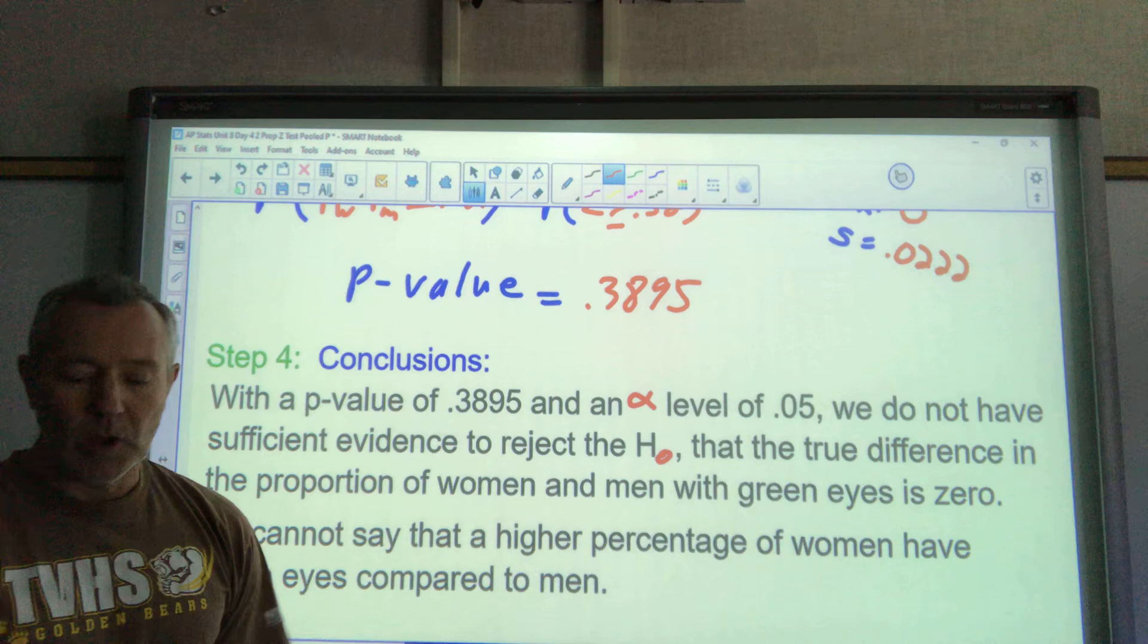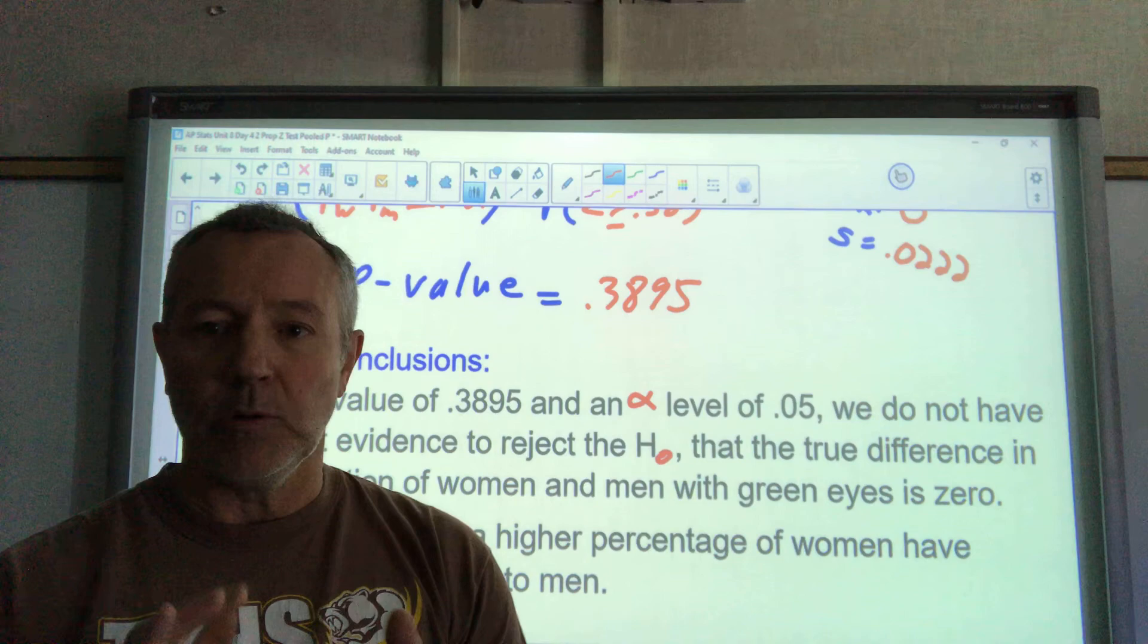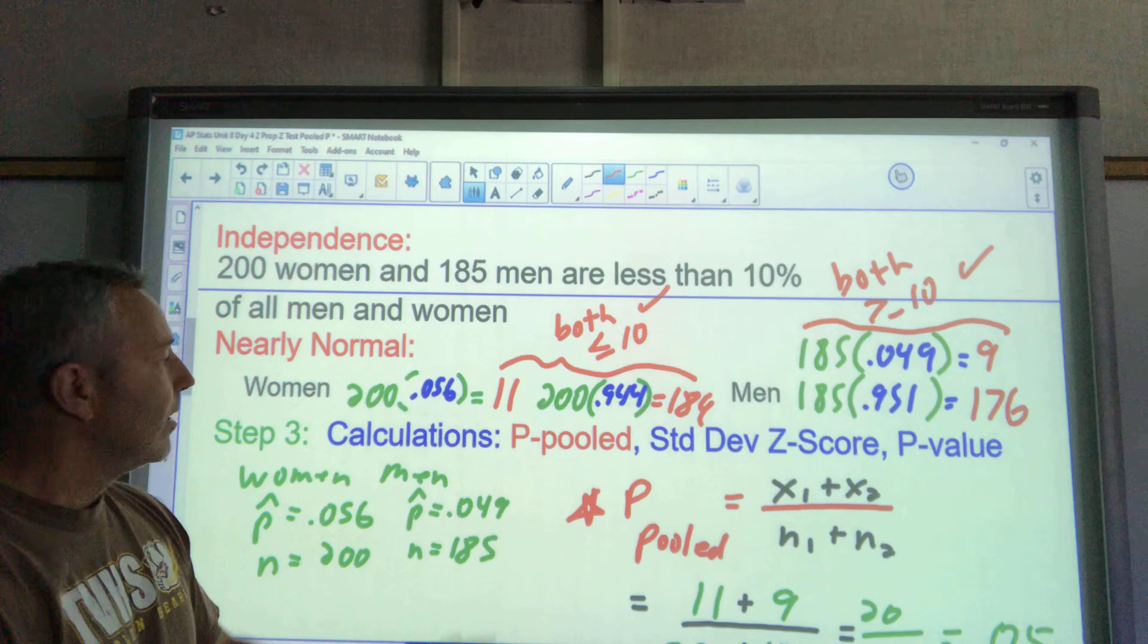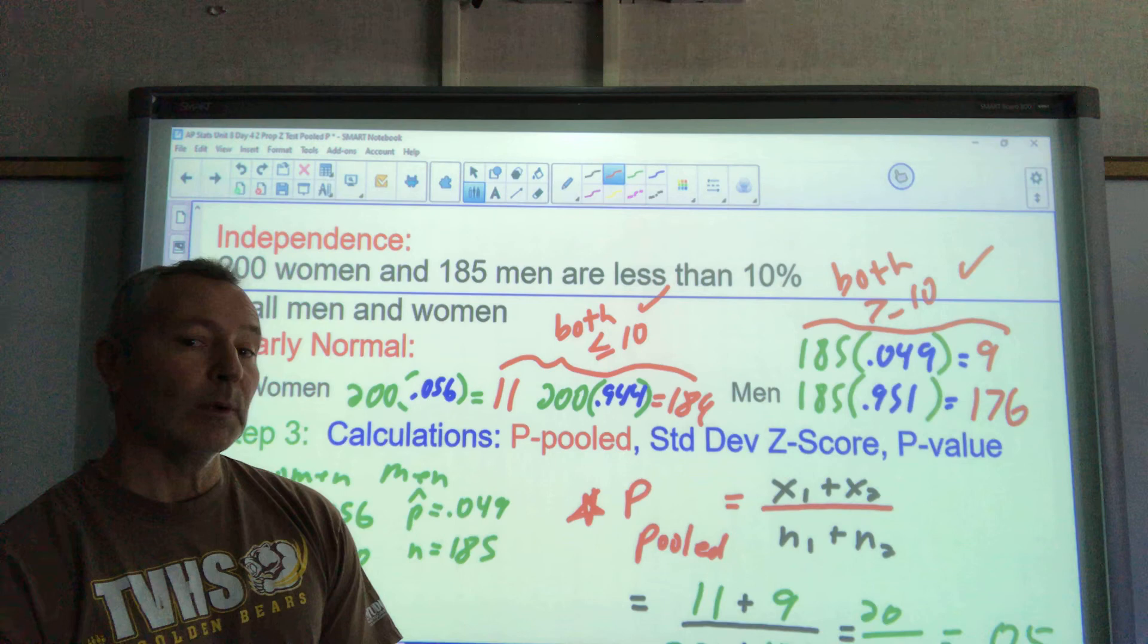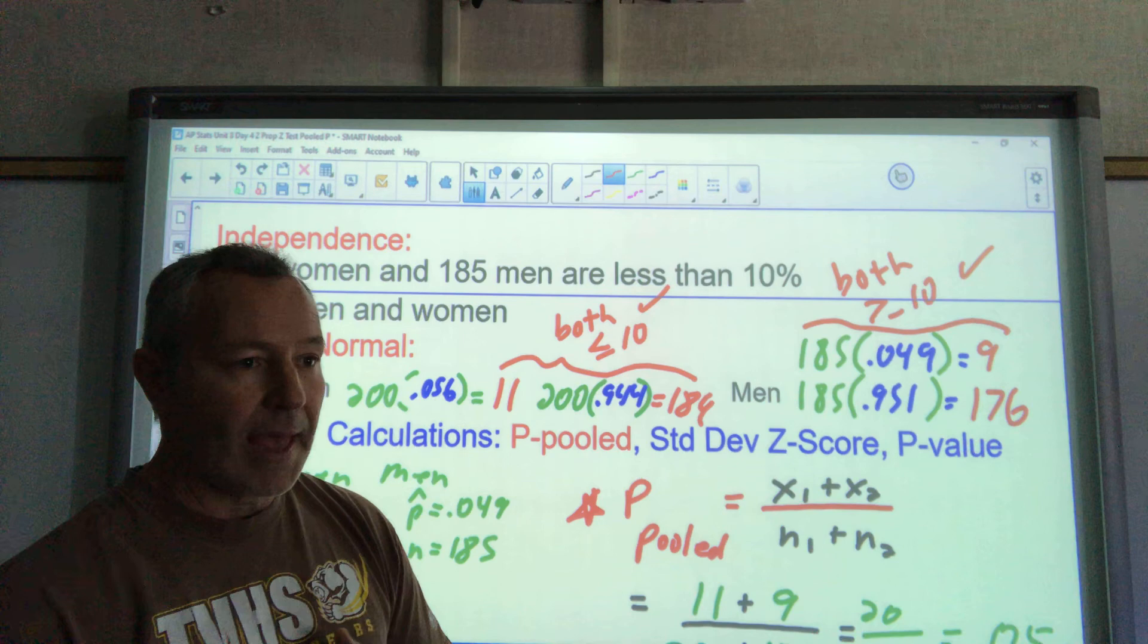Again, two-proportion Z test, the only time we pool our data. And I would accept from you, because I don't think there is a uniform agreement everywhere, that you use the P hats here or I could use the P pooled. The P pooled is really better, but again, the idea is that you're doing the conditions to see if you can run the test, and you got to check that before, then you only have the P hats to do that condition. So that's what's typically done there. But I would accept the 0.05 used in there as well. Thank you very much, guys.